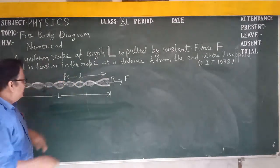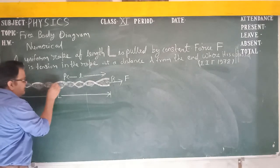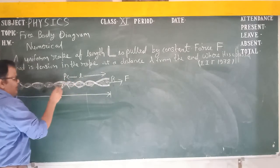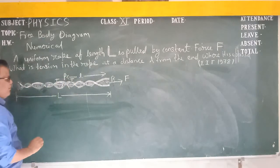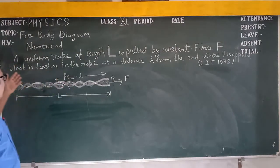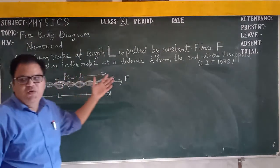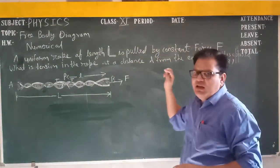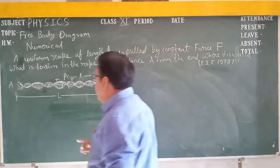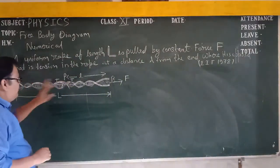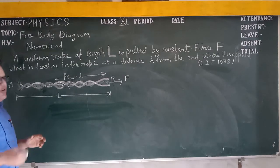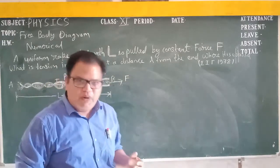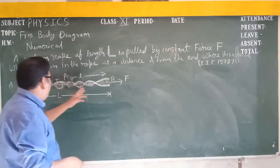So here is the tension acting in this way, and here tension is applied in the other direction. We have to find the tension at this point. First, we need to find the mass per unit length, and we divide the rope into two sections.